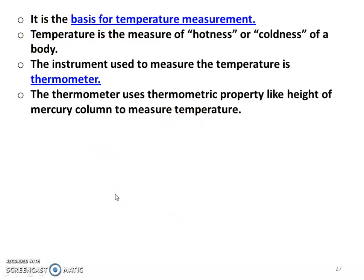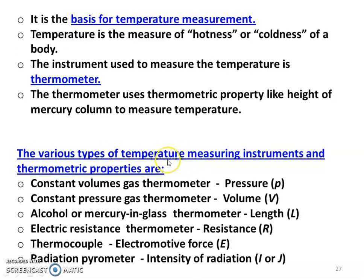From the zeroth law of thermodynamics, after defining it, a property emerges that is identified as temperature. The thermodynamic property temperature is identified from the zeroth law's thermal equilibrium concept. There are various types of temperature measuring instruments and thermometric properties: constant volume gas thermometer uses pressure; constant pressure gas thermometer uses volume; alcohol and mercury-in-glass thermometer uses length as the measuring parameter; electric resistance thermometer uses electrical resistance.